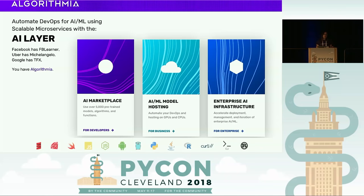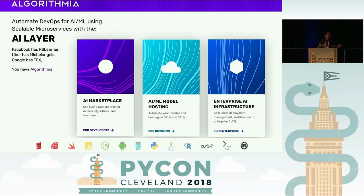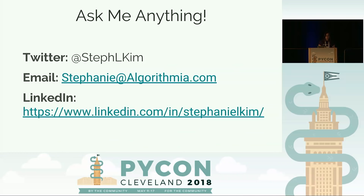A little bit about the people that pay the bills. At Algorithmia, we believe that every application will eventually become an intelligent application. But as my boss says, TensorFlow is open source — scaling, it's not. Same with PyTorch. If you've trained a neural net or a machine learning model, you know that's only part of it — you also have to productionize that model, and that's a whole other skill set. We really focus on the scaling of machine and deep learning models and are the cloud-agnostic DevOps for data science. At the end of the talk, I'm going to share a promo code so you can try deploying your TensorFlow, PyTorch, or CNTK model and kick the tires of the platform.